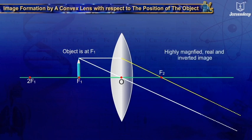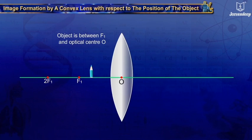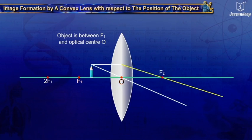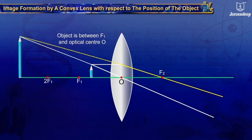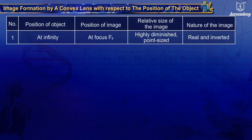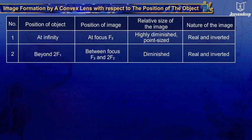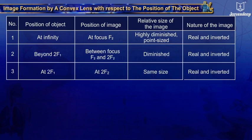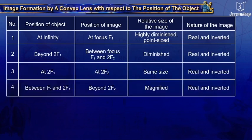When the object is between focus F1 and the optical center O, the image is formed on the same side of the lens as the object. The image is magnified, virtual, and erect. The table shows the position, relative size, and nature of image formed by a convex lens for various positions of the object.